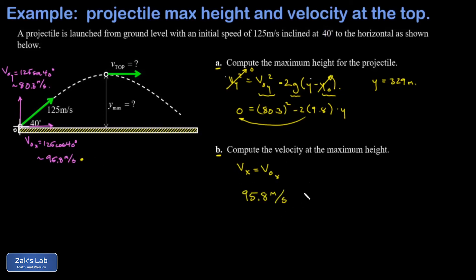And so I can say that the velocity at the maximum height is 95.8 meters per second pointing to the right. Or if you want to get really formal about it, I could call it 95.8 meters per second times i hat, the rightward pointing unit vector.